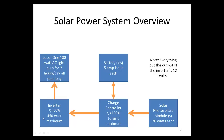Then we have an inverter. What an inverter does is take DC electricity and convert it to AC electricity. It loses some electricity along the way, so we're going to assume our efficiency is 50%. Efficiency is labeled with the Greek letter eta. Our inverter has a maximum power rating of 450 watts, so we'll have to take that into account.